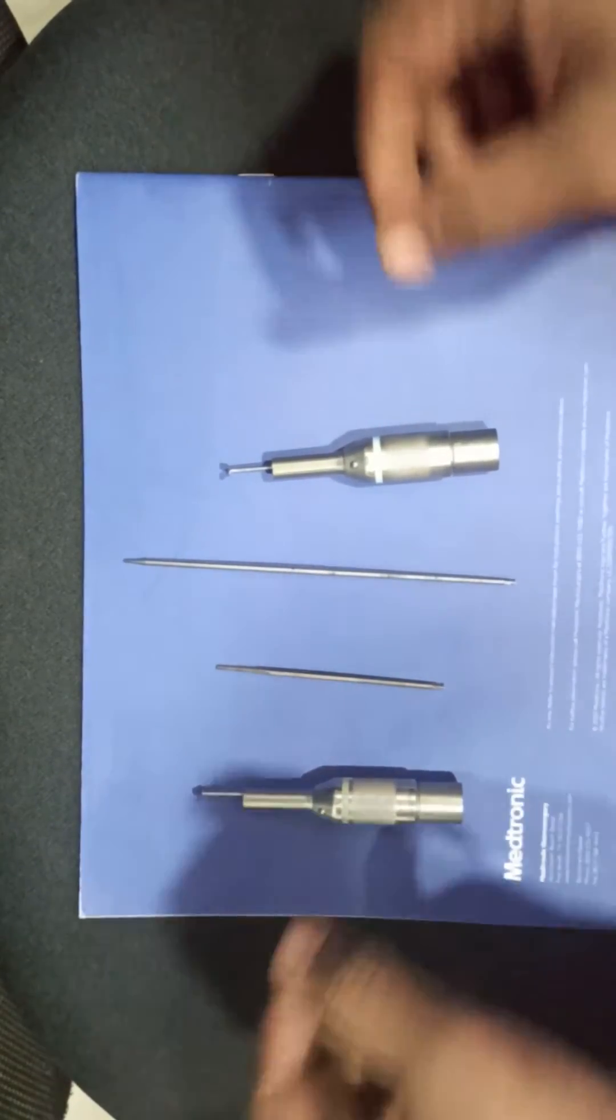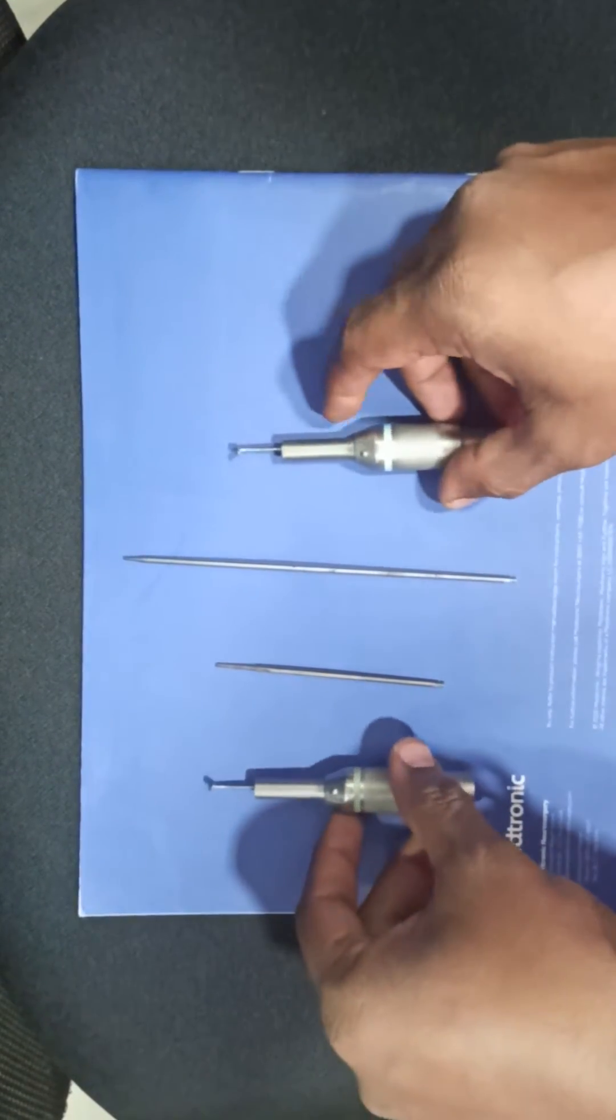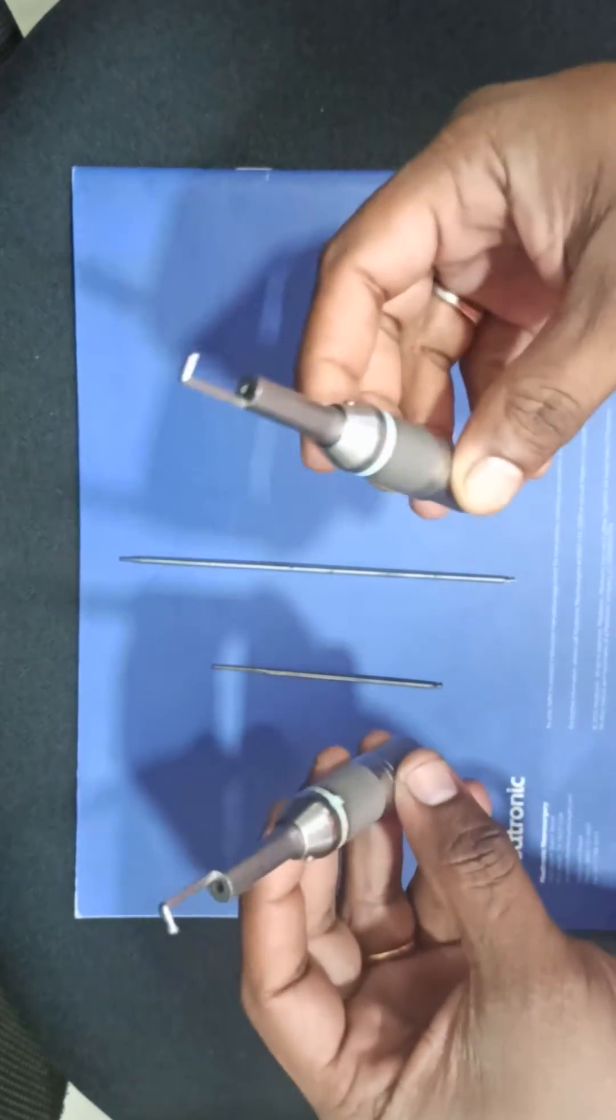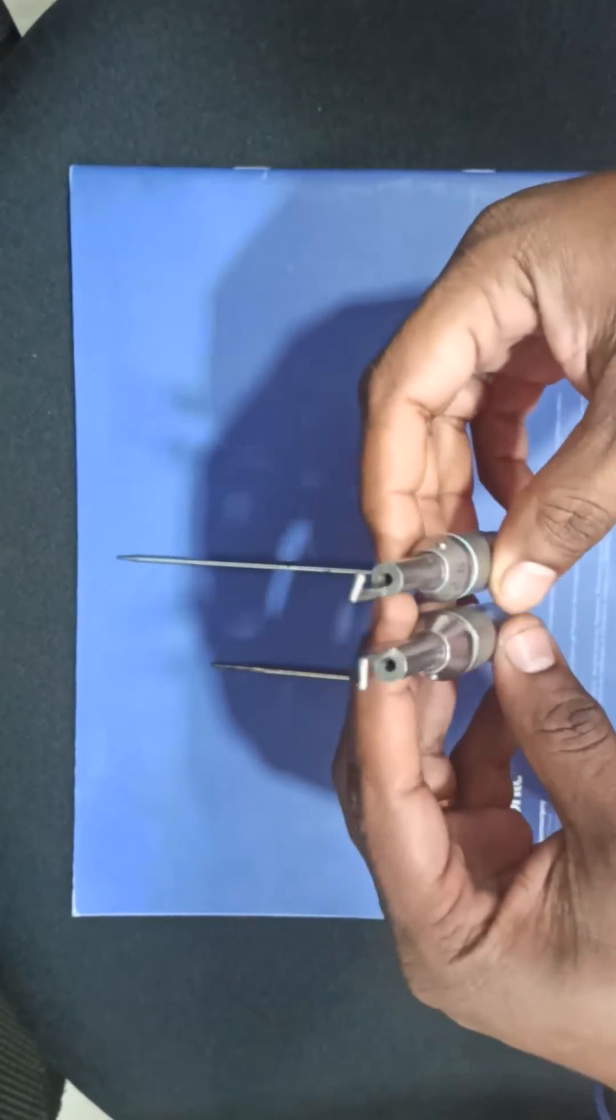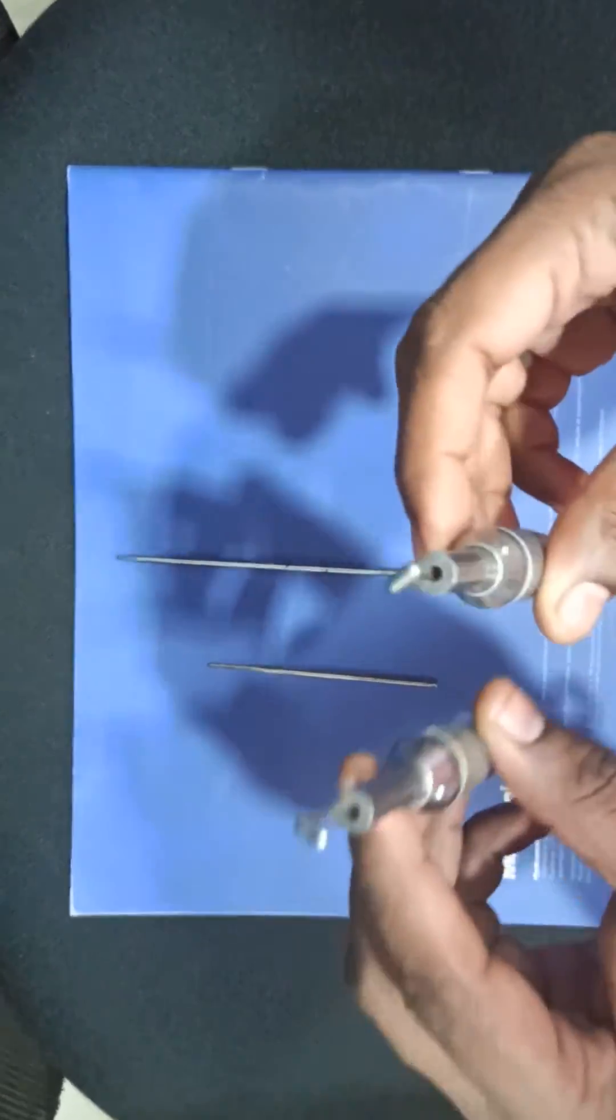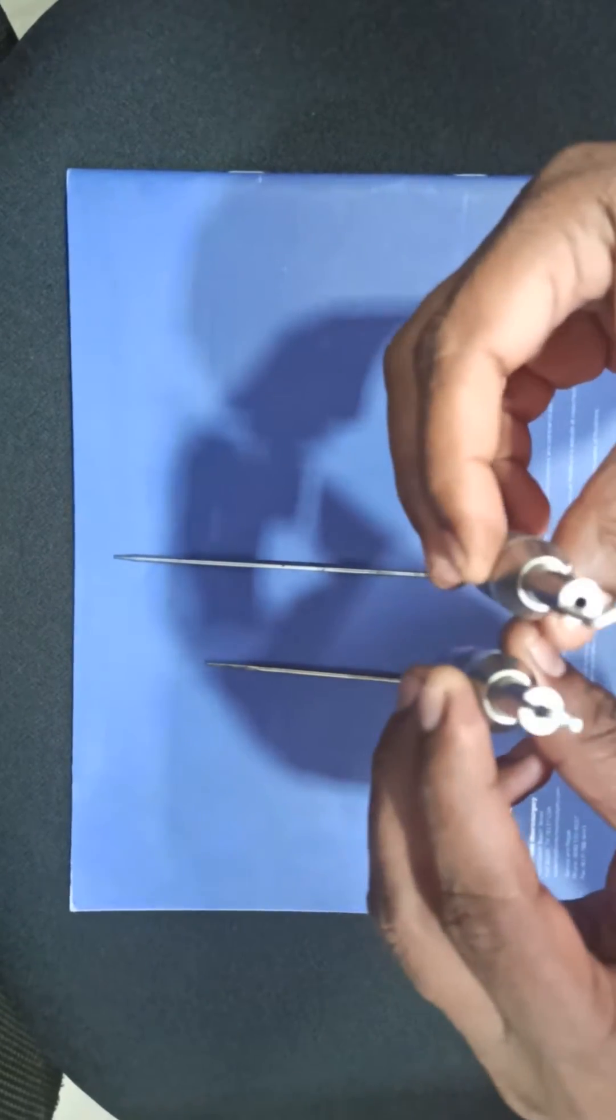Good morning to all. I'm going to demonstrate how to check the AF02 attachment. I have two attachments here - one is defective and one is working good.